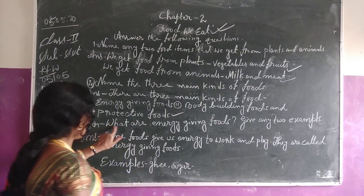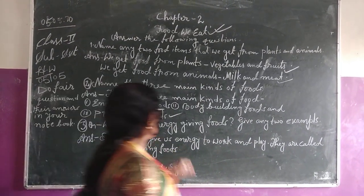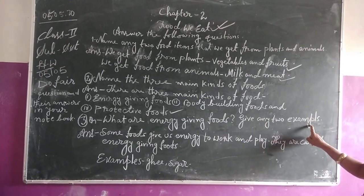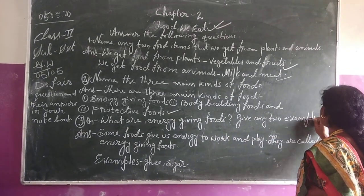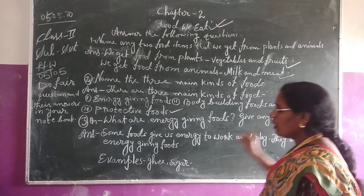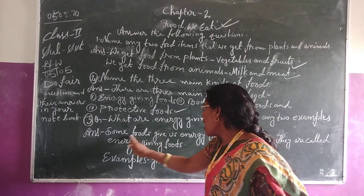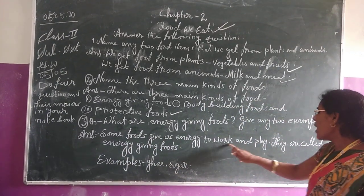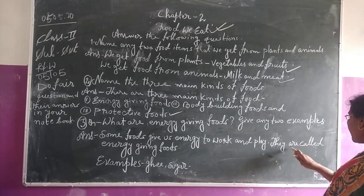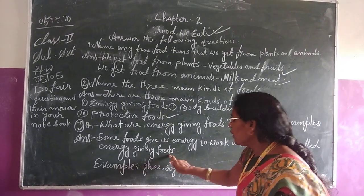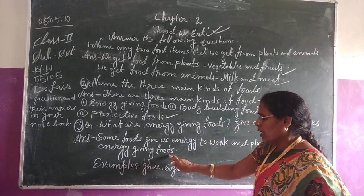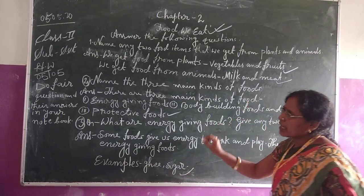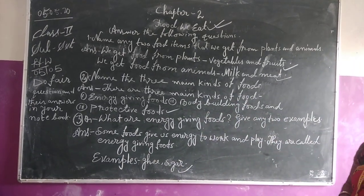Third question: what are the energy-giving foods? Give two examples. Answer: some food gives us energy to work and play. They are called energy-giving food. Example: tea and sugar. That is the answer to question number three.